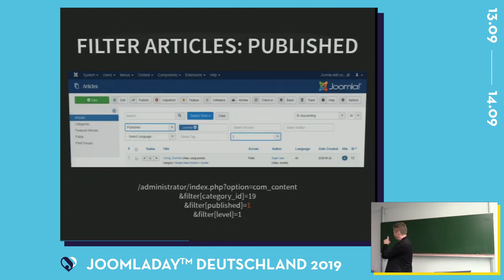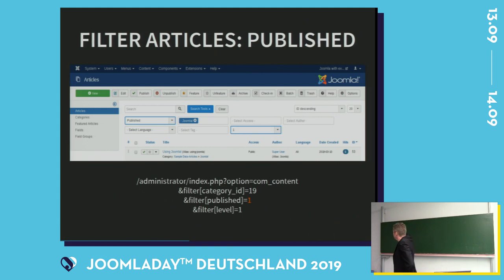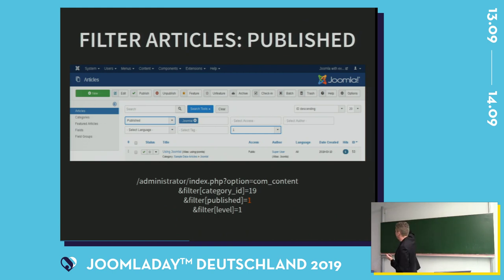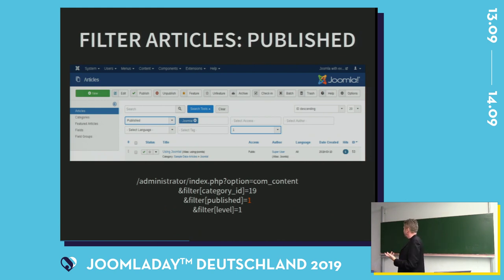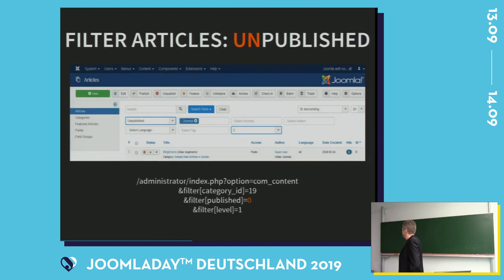The fun thing with these filters is that when you click on one, the URL changes — for example, option=com_content triggers the content component, with a filter for category ID 19 and filter_published=1 meaning only published articles are shown. If you change that to zero, you get unpublished articles. This URL structure you can use to your own benefit.